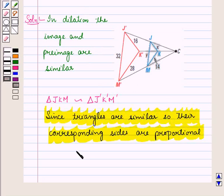So we have K'J'/KJ is equal to K'M'/KM is equal to J'M'/JM.